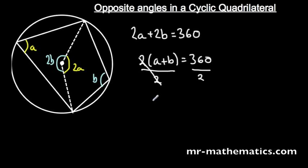So A add B — the two opposite angles have a sum of 180 degrees.